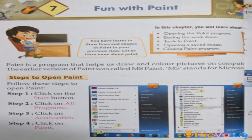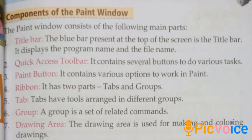To open the paint program, we have to follow these steps. Step 1, click on the Start button. Step 2, click on All Programs. Step 3, click on Accessories. Step 4, click on Paint. Now the paint program is open.